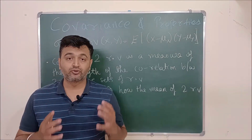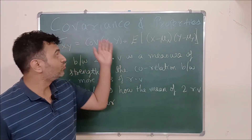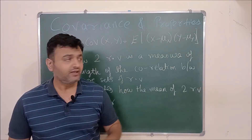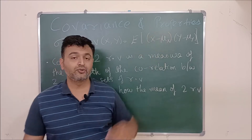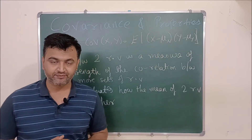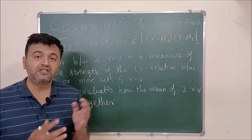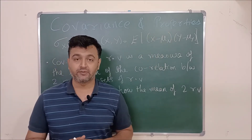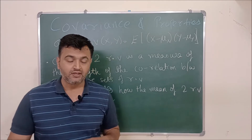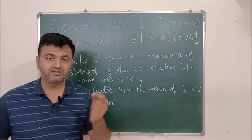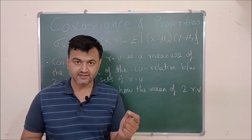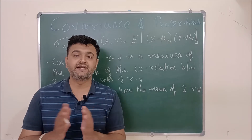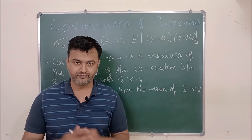Hey everyone. Today we are going to talk about covariance of a random variable and see some of its nice properties. In an earlier lecture, we talked about variance of a random variable. When you have one random variable, we study the variance and it tells us how much the data is deviated from the mean.